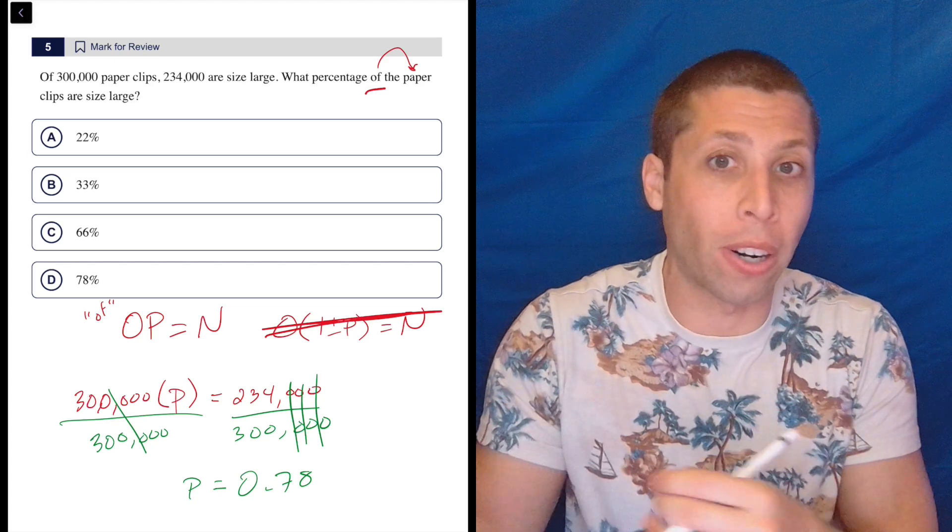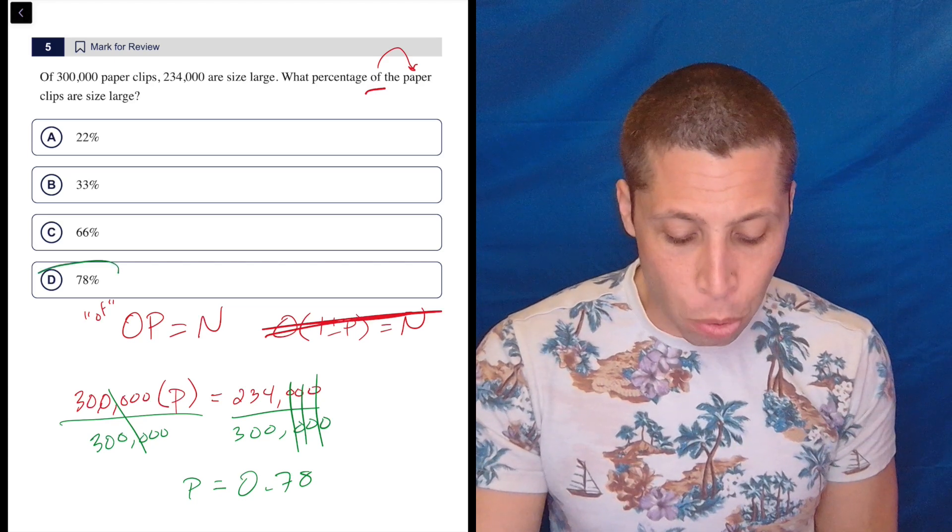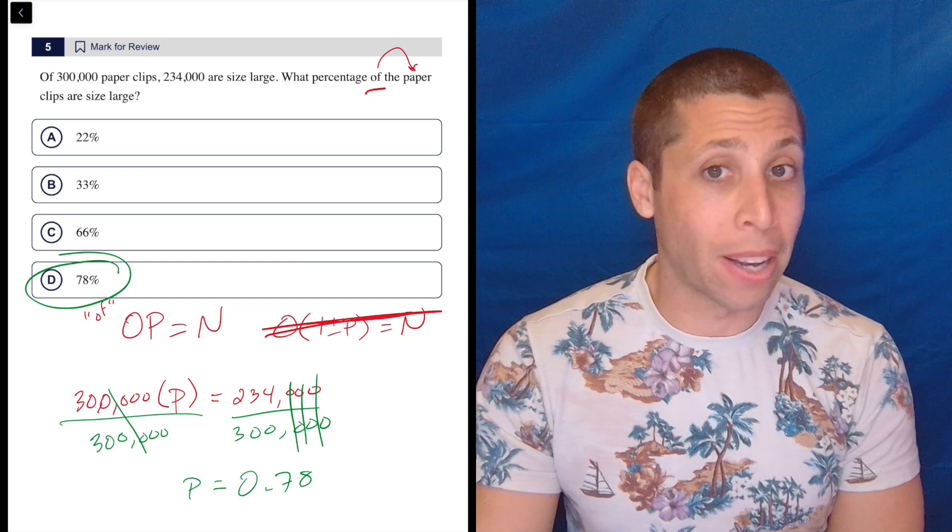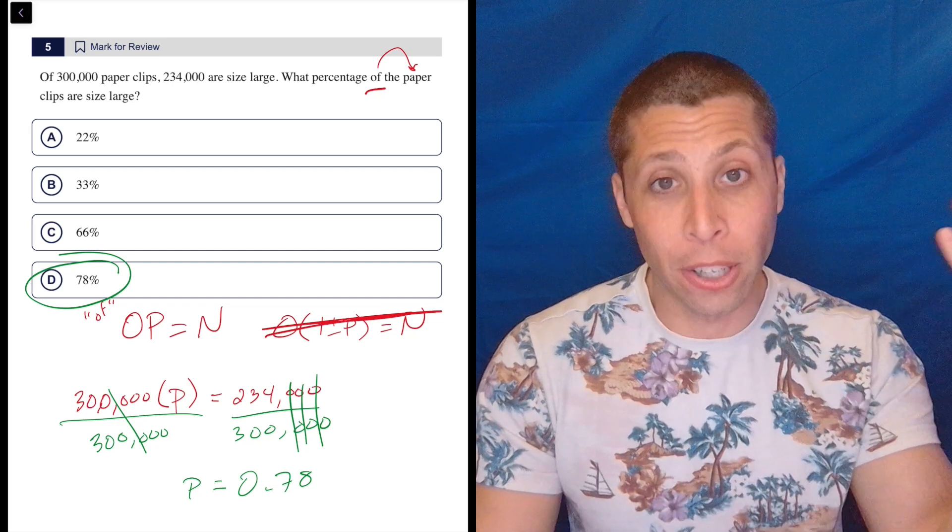So we should get comfortable with that. And we should also get comfortable with moving it back into a percentage by just moving the decimal place. So 0.78 becomes 78%. And there you go.